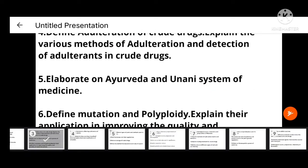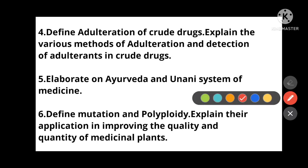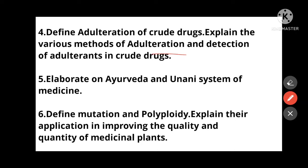The fourth important 10-mark question: Define adulteration of crude drugs, then explain the various methods of adulteration and detection of adulterants in crude drugs. You have to know what adulteration is, which types of methods are used to adulterate drugs, and how you can detect adulterants.